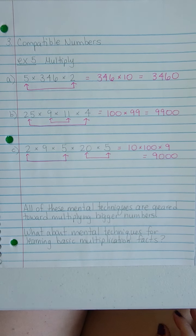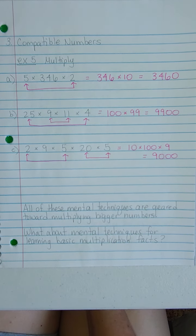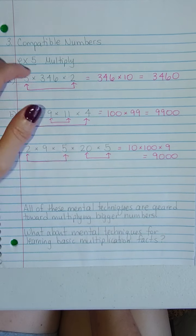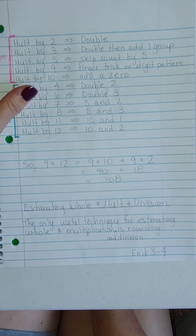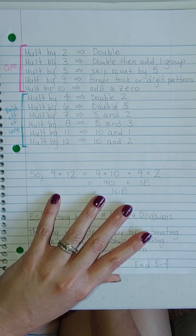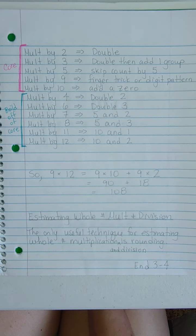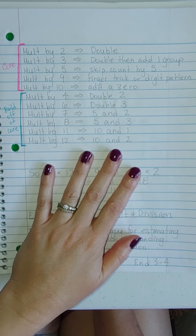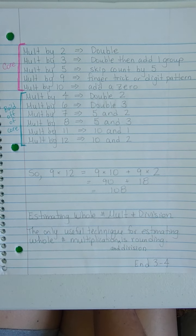So all these techniques are geared toward multiplying bigger numbers. One thing that I felt was missing from this textbook was, what about techniques for learning your basic multiplication facts? It's all geared toward these bigger numbers here. But when it comes to your basic multiplication facts, everything that we're doing here assumes that the kids know their basic multiplication facts. And I'm here to tell you that that is going to be a challenge in and of itself, because they're going to struggle with it.